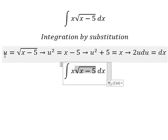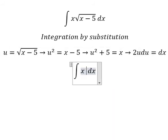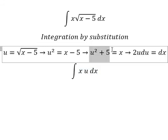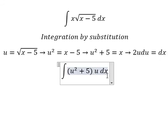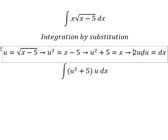The square root will change to u. x will change to u² + 5. dx will change to 2u du.